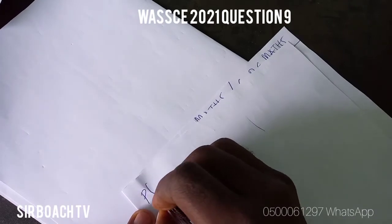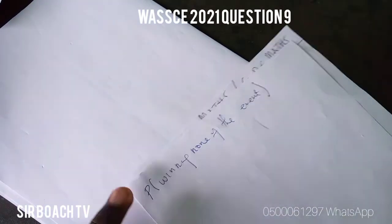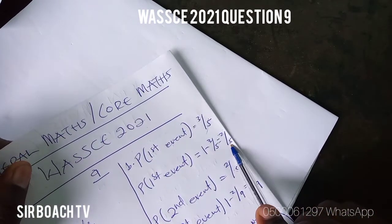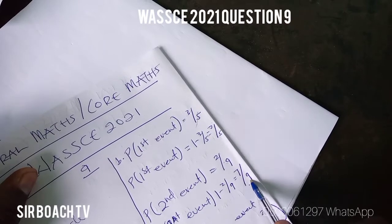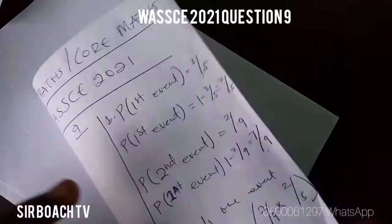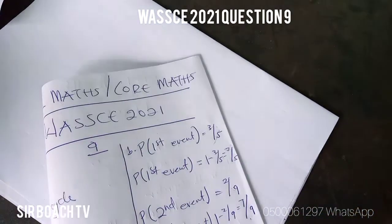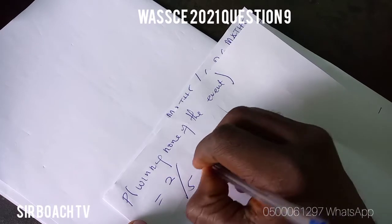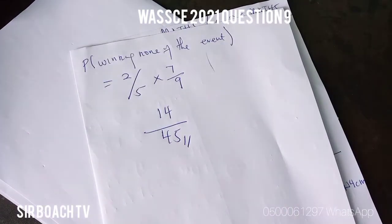The probability of winning none of the events: we multiply the probability of not winning the first event by the probability of not winning the second event. That is 2 over 5 times 7 over 9, which gives us 14 over 45. So that is the probability of not winning any of the two events.